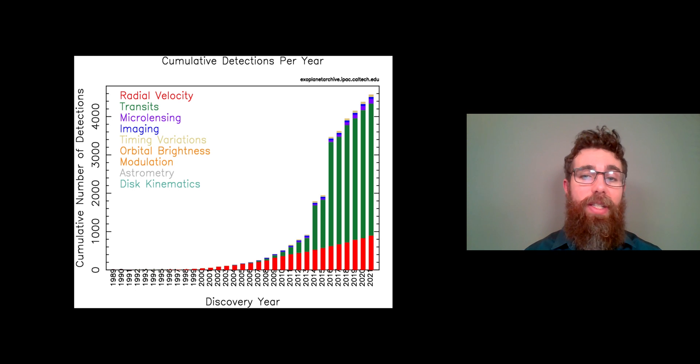Green is for transit, which is the one we're interested in for this video. Red is radial velocity, where we're using the Doppler shift to discover an exoplanet. But you can see most have been discovered from the transit method.